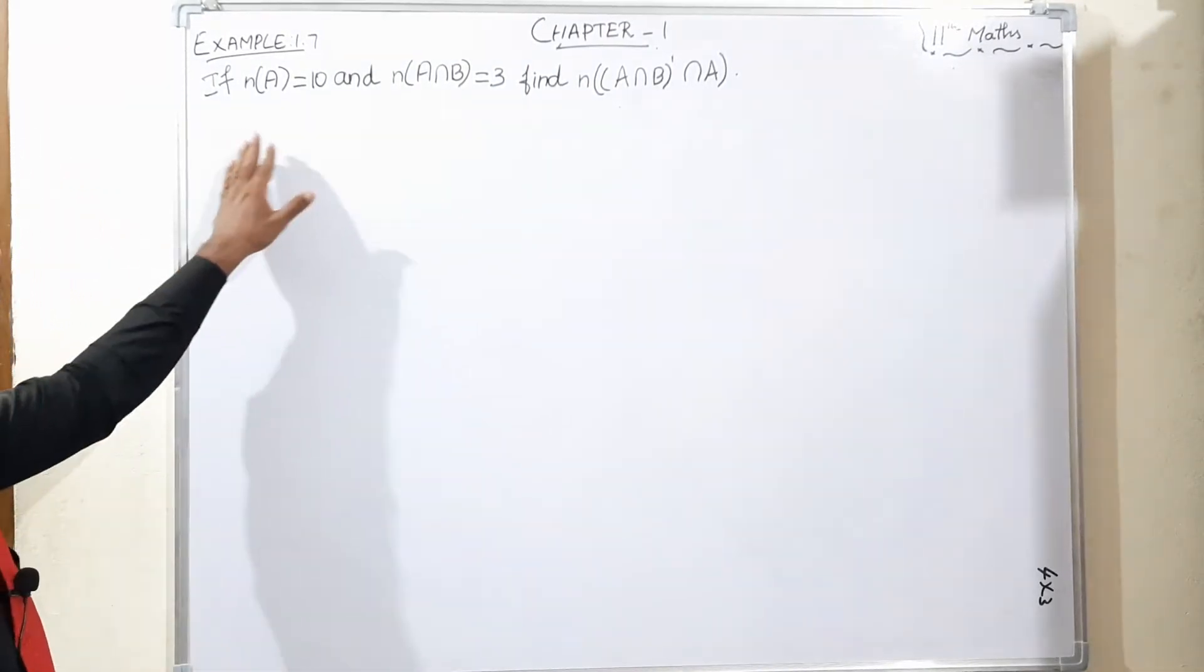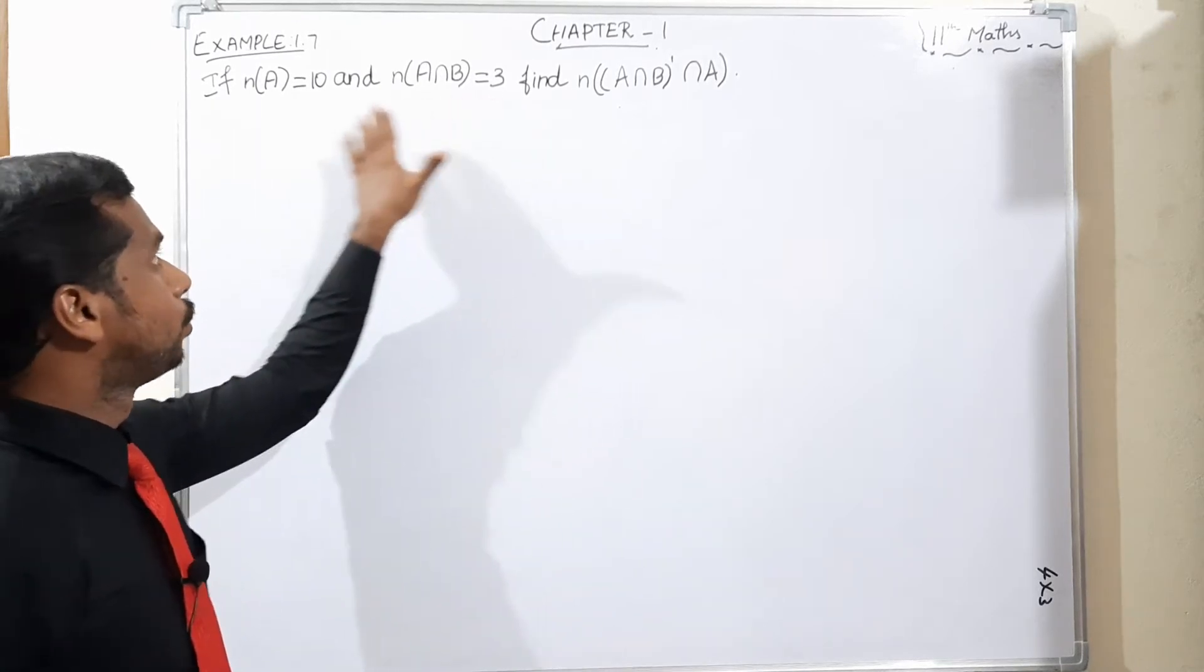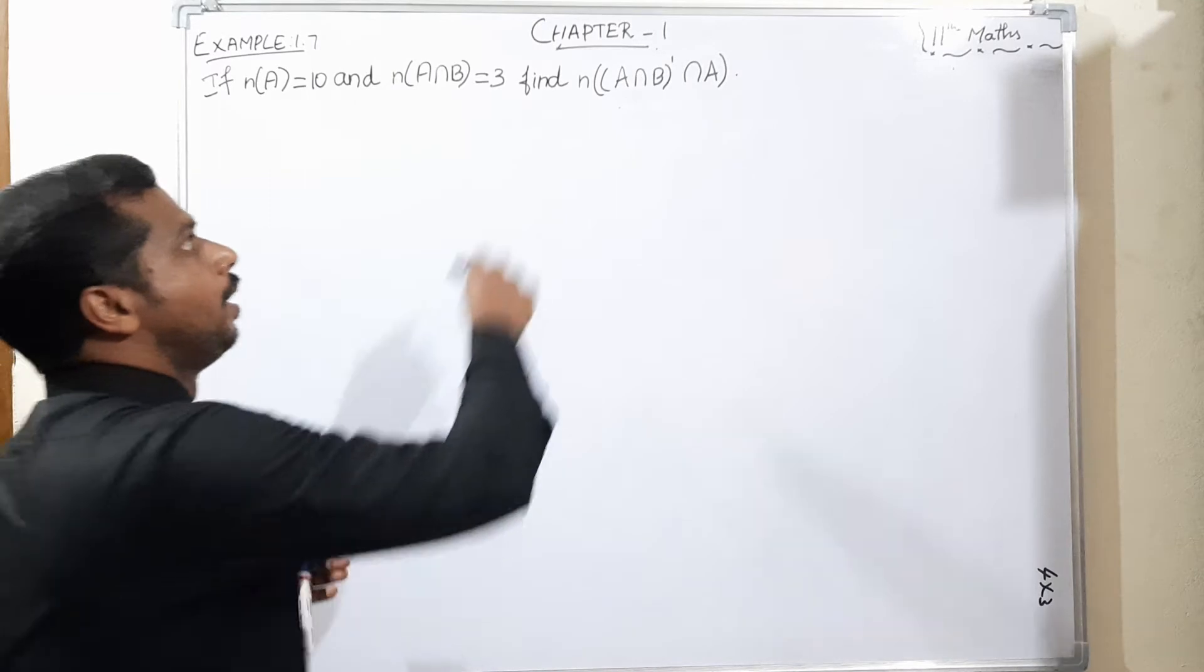What is the question? If n(A) = 10 and n(A∩B) = 3, these conditions are given. What is the condition we need to find?